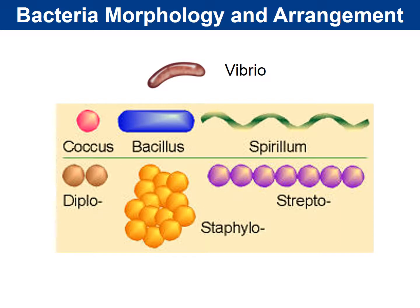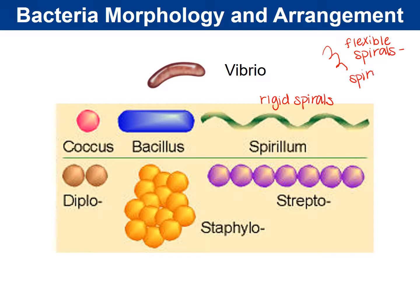When we look at bacteria, we observe various types of morphology. Some bacteria are coccus-shaped (plural: cocci). Some are rod-shaped, called bacillus (plural: bacilli). Some bacteria are spirillum — rigid spirals. Others are spirochetes — flexible spirals. Some bacteria are vibrio — curved rods. These are the basic, common types of morphologies you would typically see.